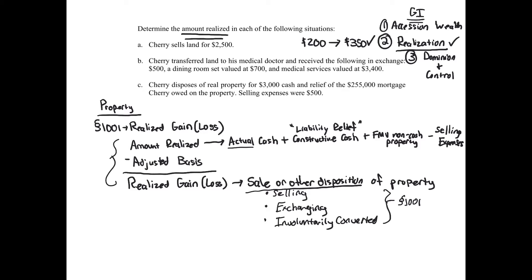Another way to think about amount realized is simply: what are you getting? You look through the problem and ask what the party whose amount realized you're determining is receiving — whether it's a CPA exam question, a law school exam, the bar, or the EA exam, you're going to see amount realized. At the end of the day, you're asking what inflows are they getting, and we use the four-part formula to guide us through all possible issues.